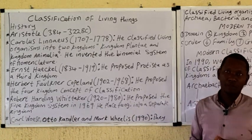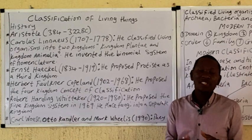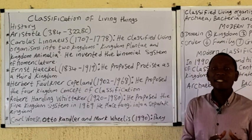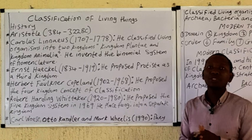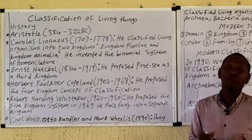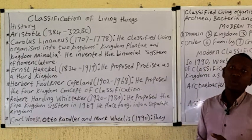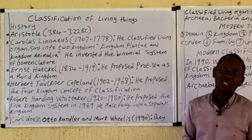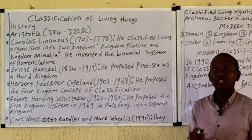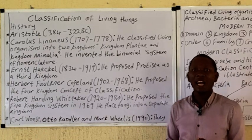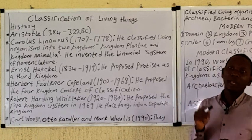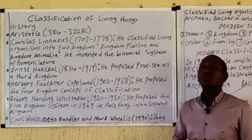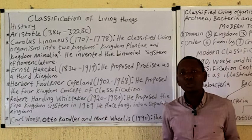Robert Whittaker in 1969 proposed the five-kingdom concept, in which he separated the fungi and assigned them to a new kingdom. In this case we have: kingdom Monera, kingdom Protista, kingdom Fungi, kingdom Animalia, and kingdom Plantae.